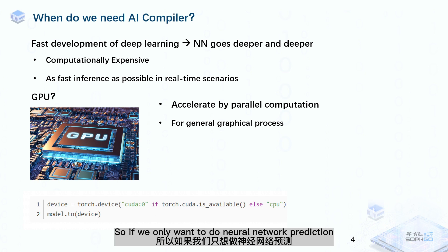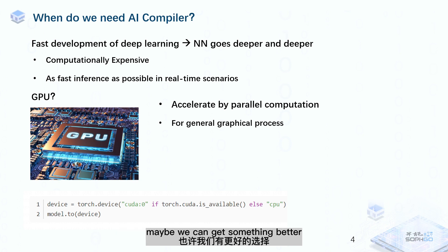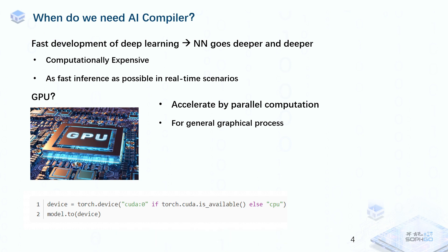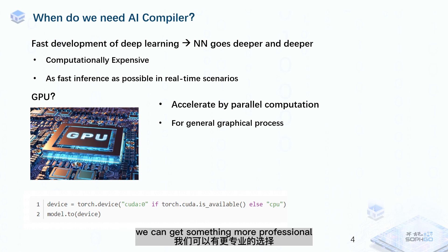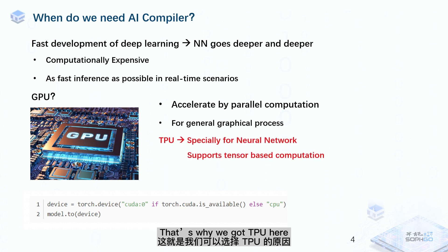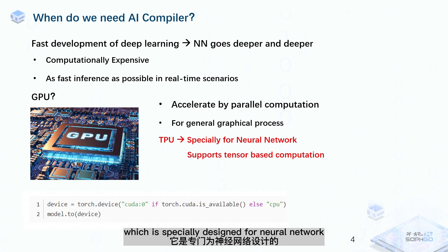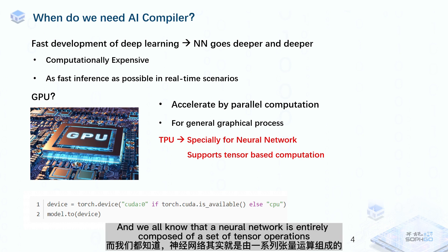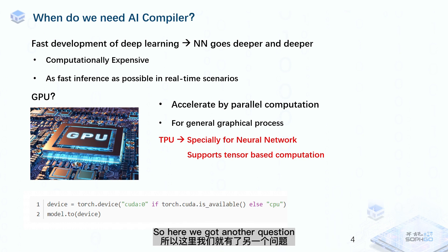But GPU is generally designed for graphical processing, which means it's not only for deep learning. So if we only want to do neural network prediction, maybe we can get something better — or we can say something more professional. That's why we need the TPU here, which is specially designed for neural networks because it supports tensor-based computation. And we all know that neural networks are entirely composed of a set of tensor operations. So that brings up another question: how can we run a neural network on a TPU?